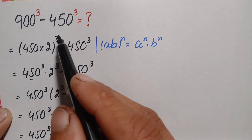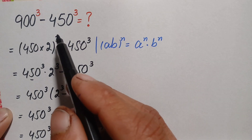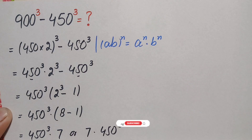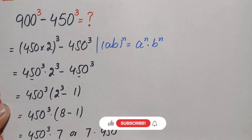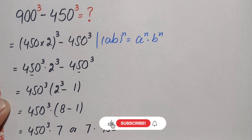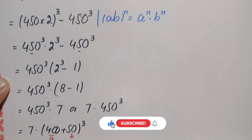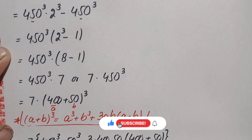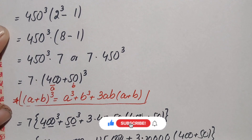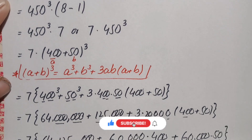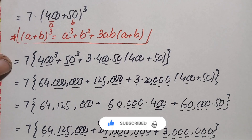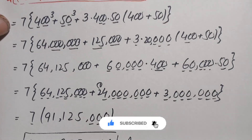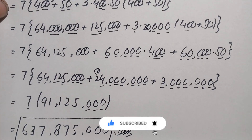So finally 637,875,000 is our answer and the value of this interesting simplification math problem. If you like this video, don't forget to subscribe to my YouTube channel for more interesting step-by-step math videos. Thanks for watching.